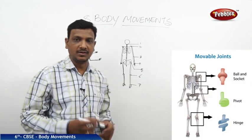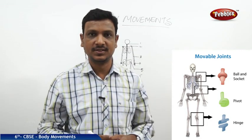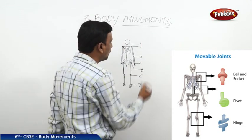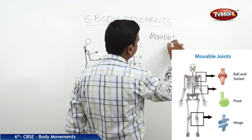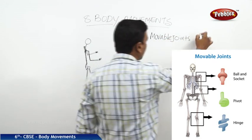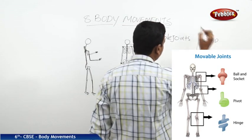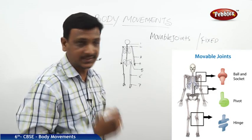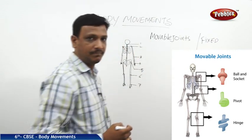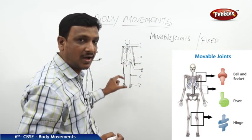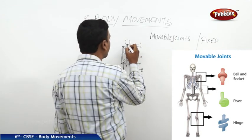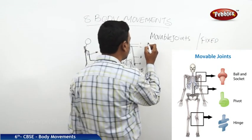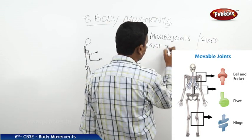In our body we have different types of joints. Mainly there are two kinds: fixed joints and movable joints. Here we are talking about movable joints. The joint found between the head and neck is the pivot joint — it is a kind of movable joint.